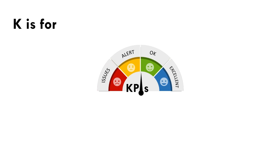These indicators help organizations understand their environmental impact and track progress towards reducing their ecological footprint. Social KPIs cover a wide range of aspects including employee diversity and inclusion, health and safety records, employee satisfaction, community engagement, and social impact initiatives. Governance KPIs evaluate the effectiveness of a company's governance practices, with examples including board composition, executive compensation, shareholder rights, and anti-corruption measures.